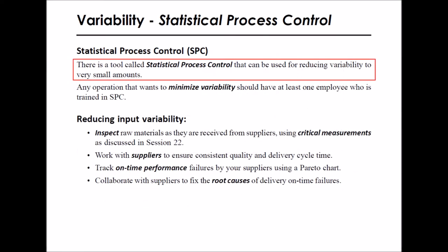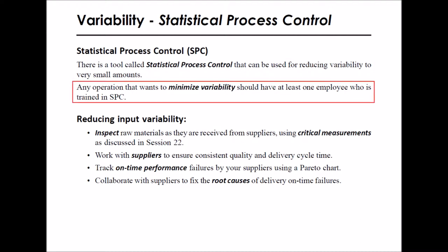Next we will briefly mention a tool called Statistical Process Control, also known as SPC, that can be used for reducing variability to very small amounts. Any operation that wants to minimize variability should have at least one employee who is trained in SPC. SPC is beyond the scope of this course, but it's mentioned here because it's an important tool for reducing variability.